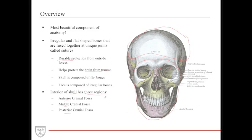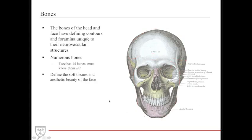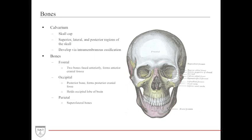These specific regions of the skull help you identify different central nervous structures within the skull itself. The bones of the head and face are very unique because they have very defining contours, unique to anywhere else in the body, with their own purpose based on their structure and shape. They also contain very small channels or tunnels called foramina — important passageways for neurovascular structures. There are 14 facial bones, very important to know them all. The head and neck also has a structure called the calvarium, also called the skull cap, which protects the central nervous system superiorly, laterally, and posteriorly, formed by intramembranous ossification.